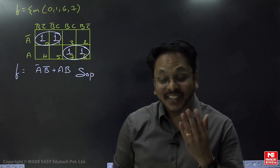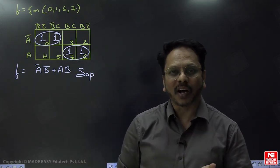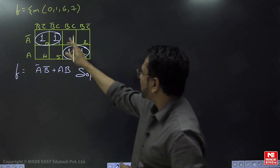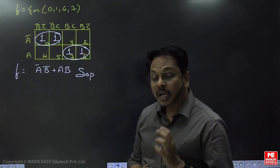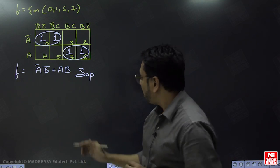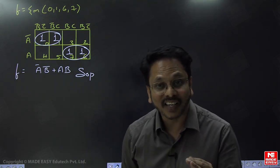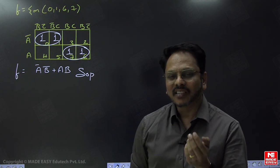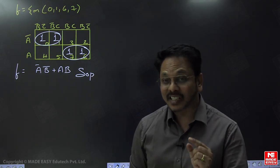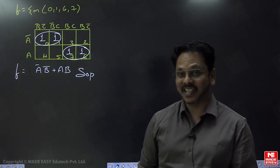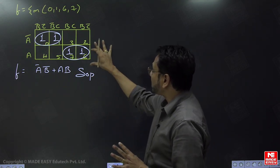So that SOP form we know. But if we are in need of the POS form — because the question asked sigma small m(0,1,6,7) but all the answer options are given in POS form — then how do we solve it? For this there is an interesting technique: you just modify the K-map itself in a new way.